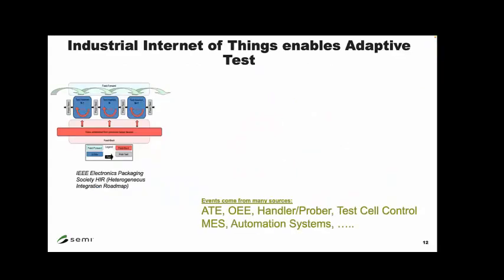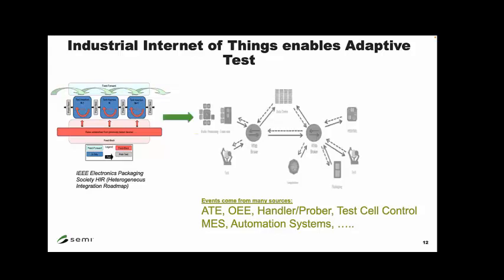We also address Internet of Things to enable adaptive tests. On the left is a picture from the heterogeneous integration roadmap showing data feed forward, feedback, and data within the test cell going back and forth. A picture from SEMI shows the front end all the way to the back end. The goal eventually is on-tester analytics — an edge application or edge appliance to share data, analyze it, and impact the program at either operational or die-testing level.